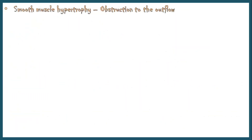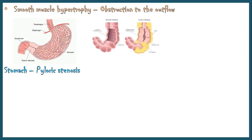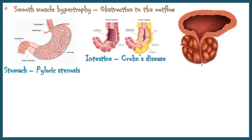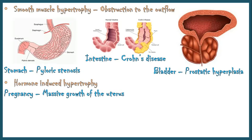Smooth muscle hypertrophy occurs when there is an obstruction to the outflow of the contents of a hollow muscular organ. For example, hypertrophy of the stomach occurs in pyloric stenosis, hypertrophy of the intestine occurs in Crohn's disease, and bladder hypertrophy occurs in prostatic hyperplasia. Sometimes hypertrophy is caused by hormonal stimulation, such as massive growth of the uterus during pregnancy.